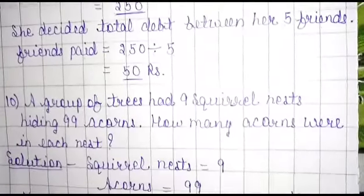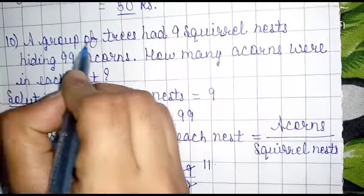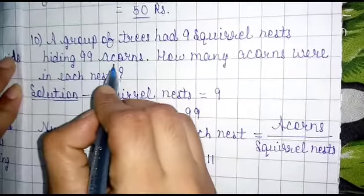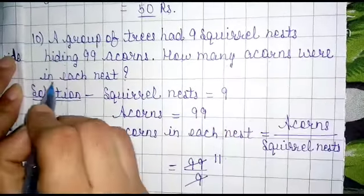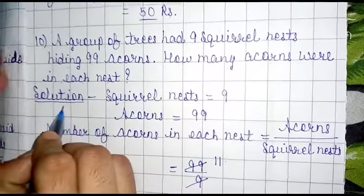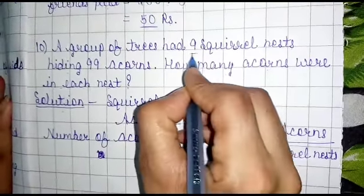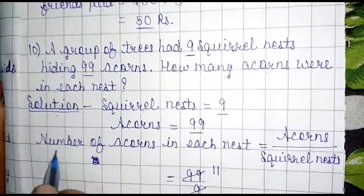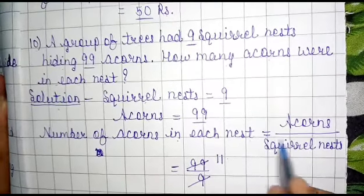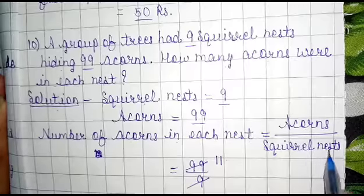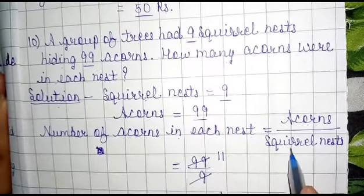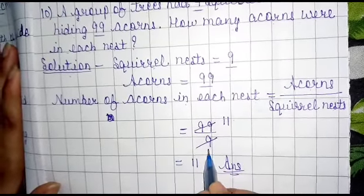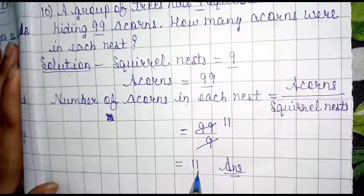Next and last, Question 10. A group of trees had 9 squirrel nests hiding 99 acorns. How many acorns were in each nest? Solution: squirrel nests = 9, acorns = 99. Number of acorns in each nest equals acorns divided by squirrel nests — 99 divided by 9 equals 11.